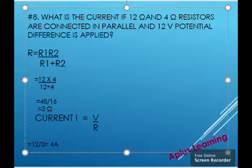Yes kids, now let us see the next question. What is the current if 12 ohm and 4 ohm resistors are connected in parallel and 12 volt potential difference is applied?